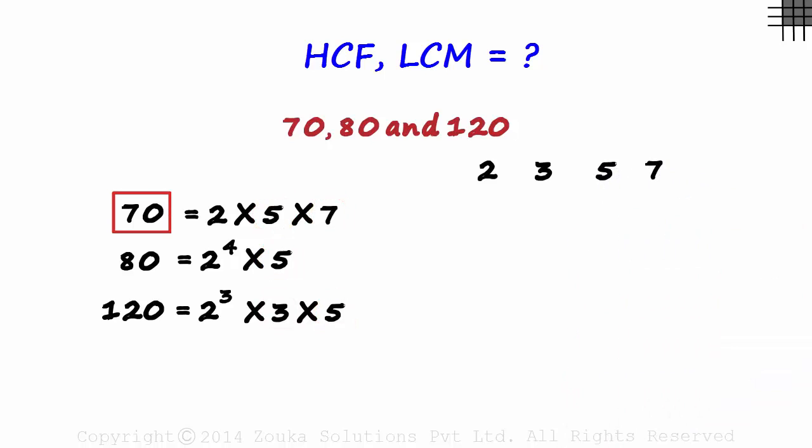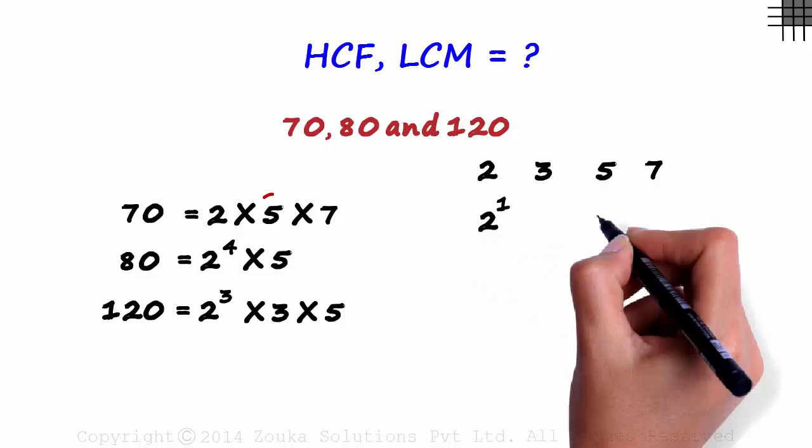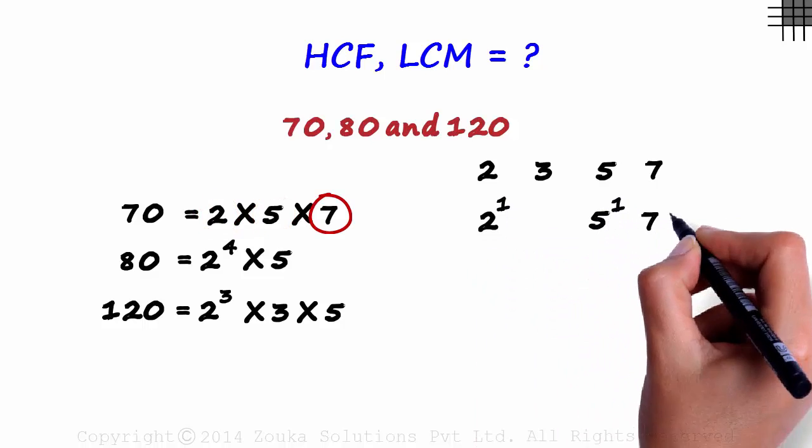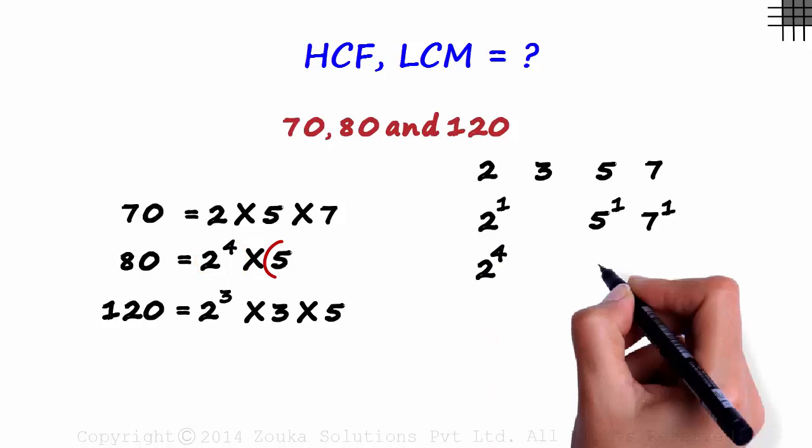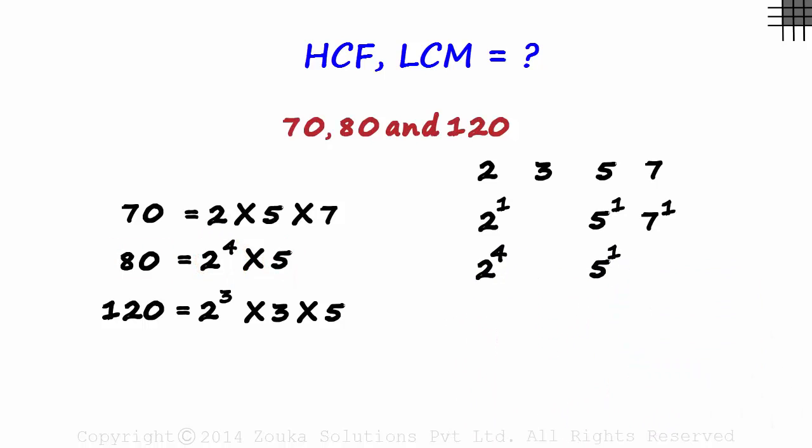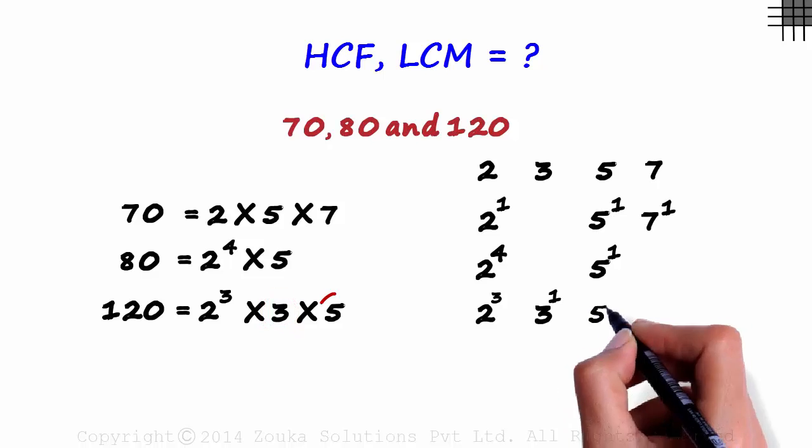In 70, we have 2 raised to 1, 5 raised to 1 and 7 raised to 1. In 80, we have 2 raised to 4 and 5 raised to 1. And in 120, we have 2 cubed, 3 raised to 1 and 5 raised to 1.